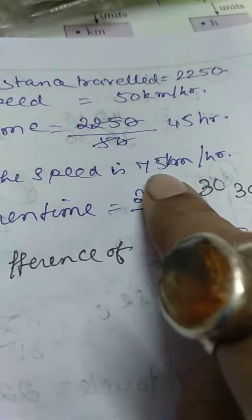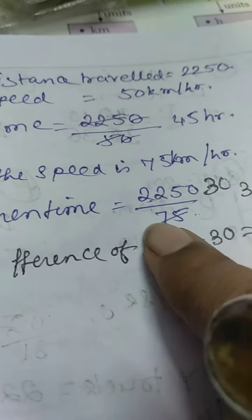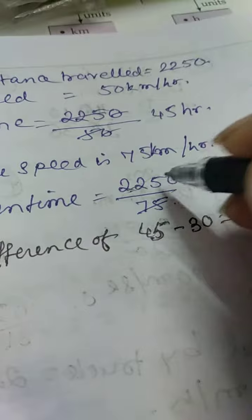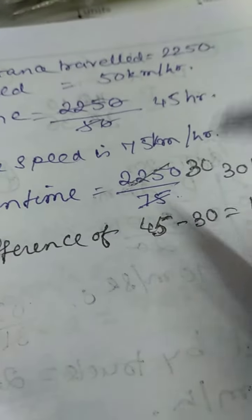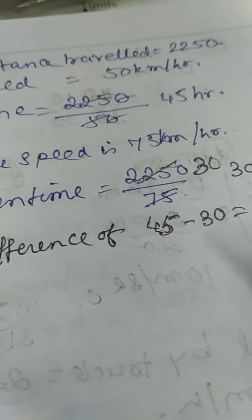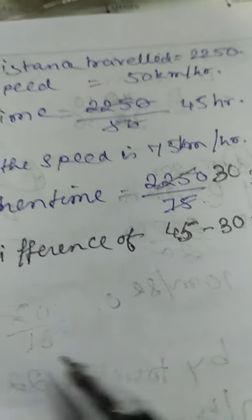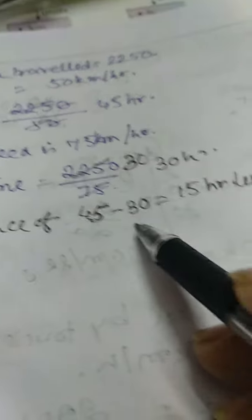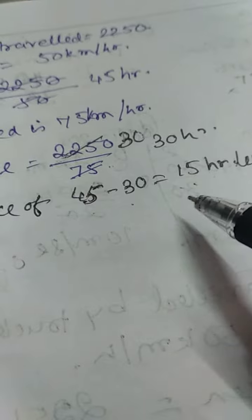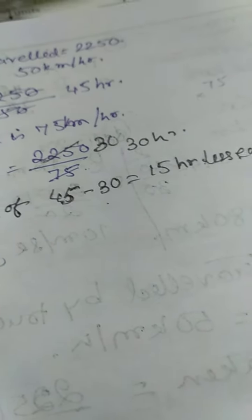Now, if the speed is increased to 75 km per hour and we divide it, we will get 30 hours. So we have been asked the difference between the time. How much less time will it take? So difference will be 45 minus 30, that means it will take 15 hours less. Answer will be 15 hours less.